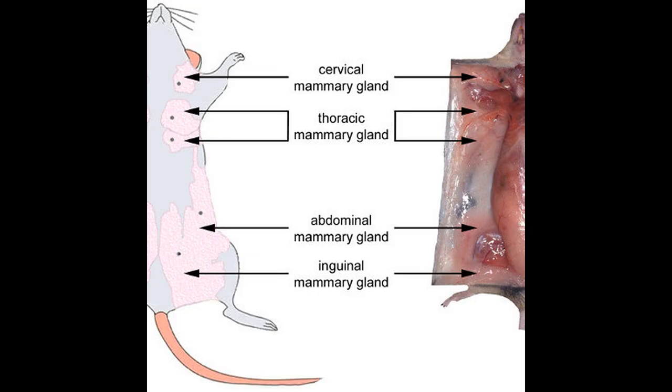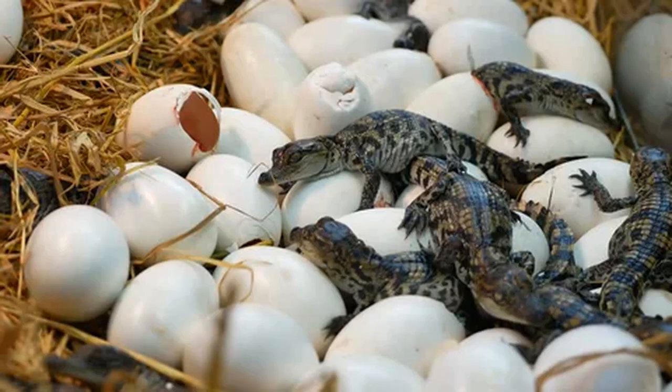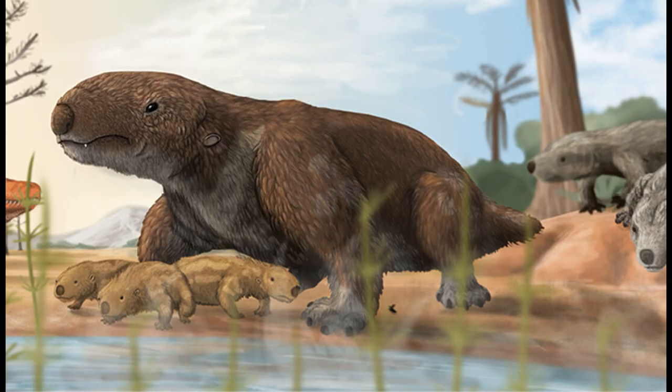In addition to cooling eggs, lactation can also provide supplemental water, nutrients, and antimicrobials to offspring. It's not uncommon for hatchlings to consume the eggshell after hatching, so perhaps after these early synapsids hatched from their eggs, they also consumed lactation that covered the eggshell. Later, hatchlings would consume more of the lactation directly from the parents.